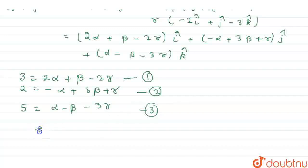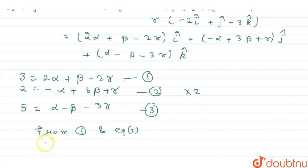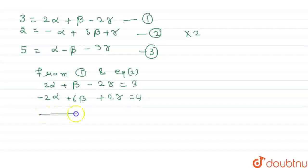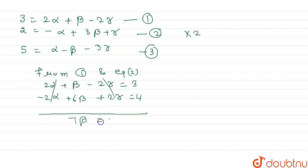Now we solve equation 1 and equation 2. We multiply equation 2 by 2, giving minus 2alpha + 6beta + 2gamma = 4. Adding to equation 1: 2alpha minus 2alpha cancels, and minus 2gamma plus 2gamma cancels, giving us 7beta = 7. So here we have beta equal to 1.